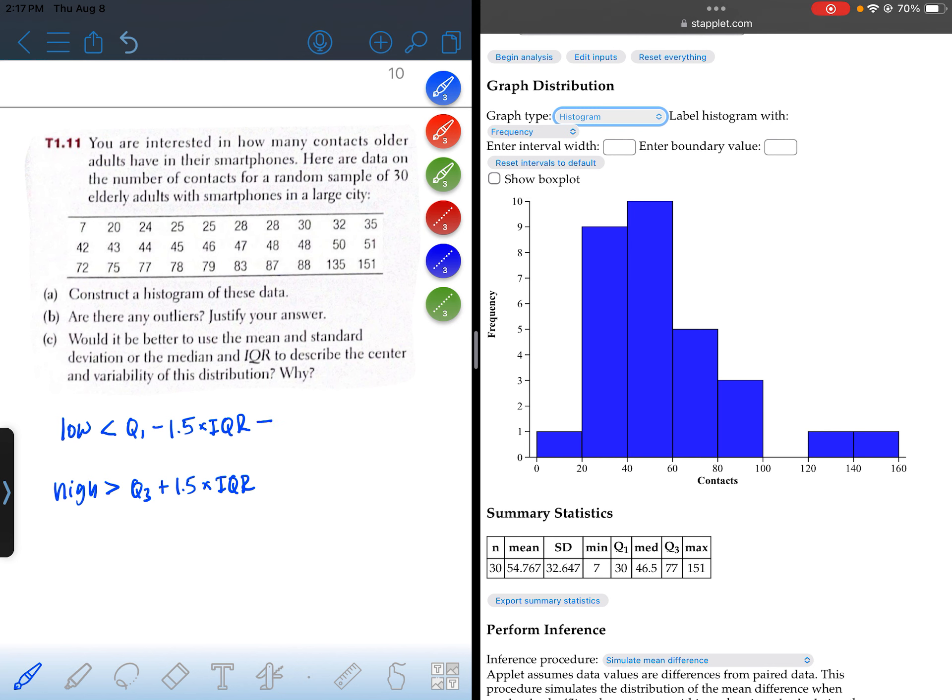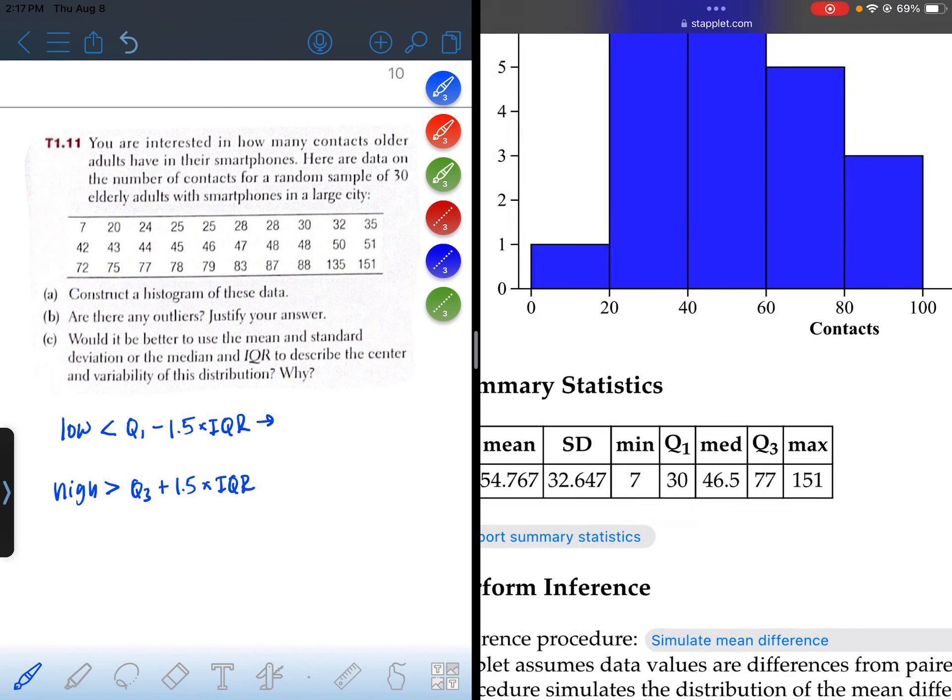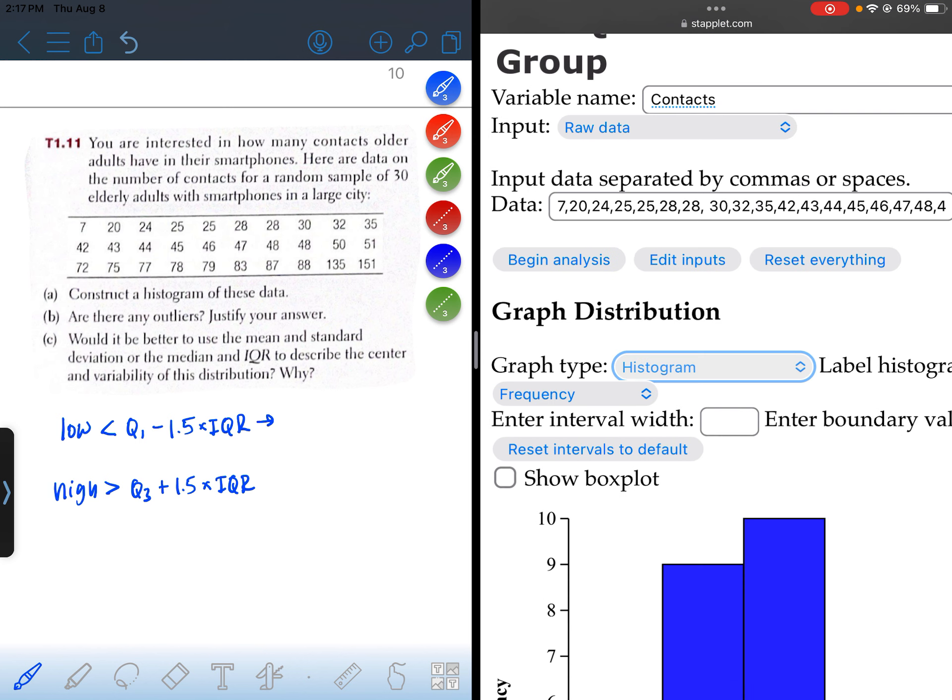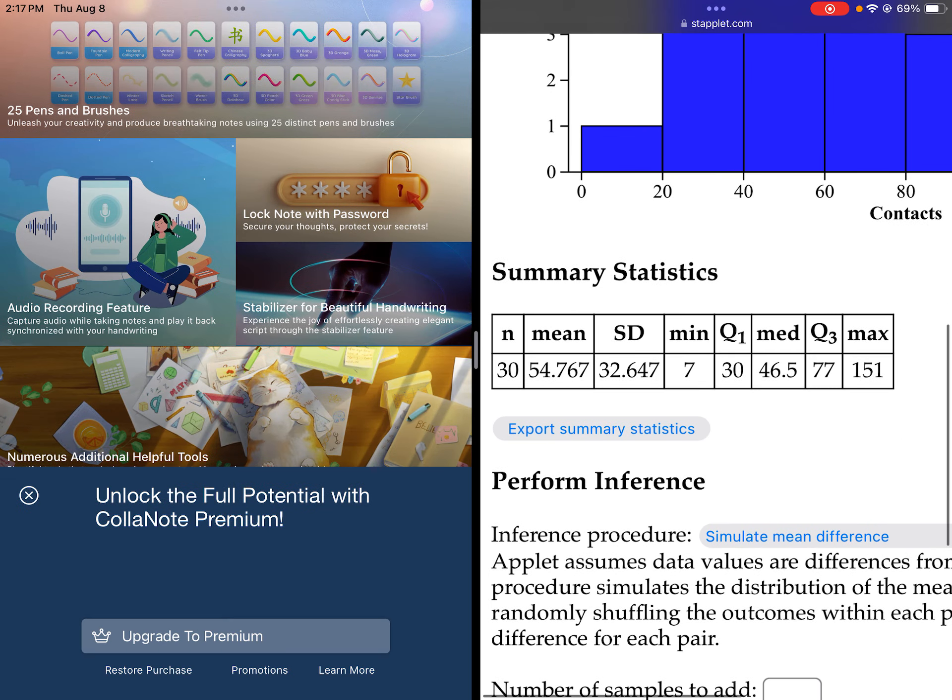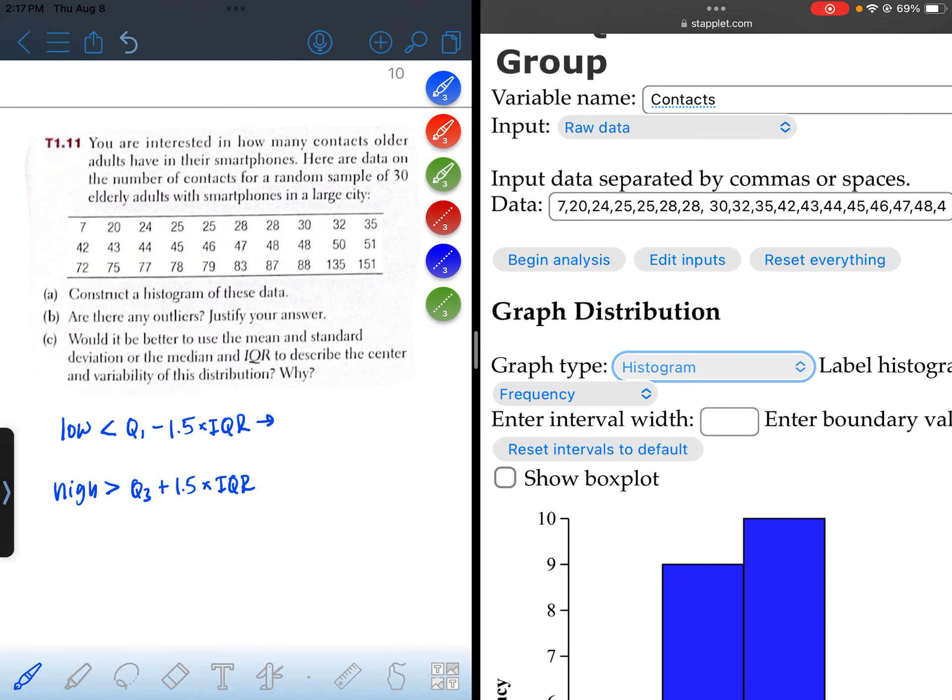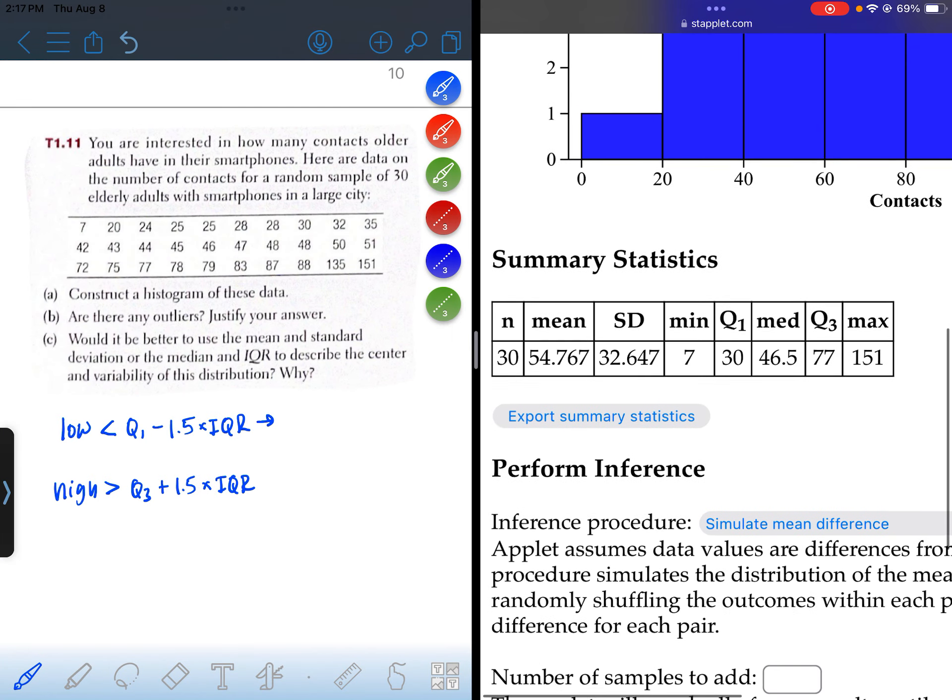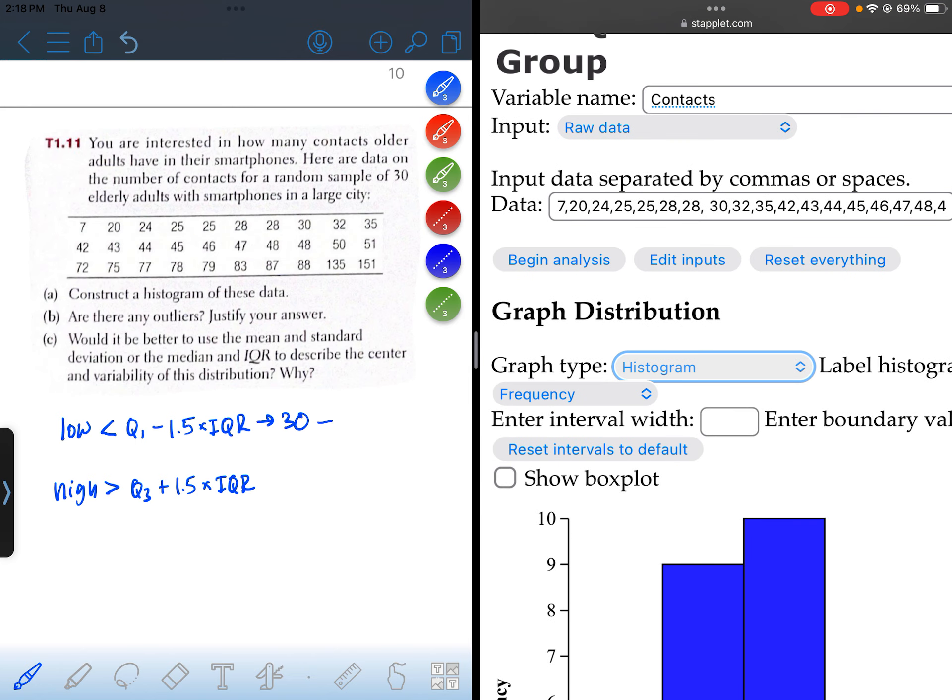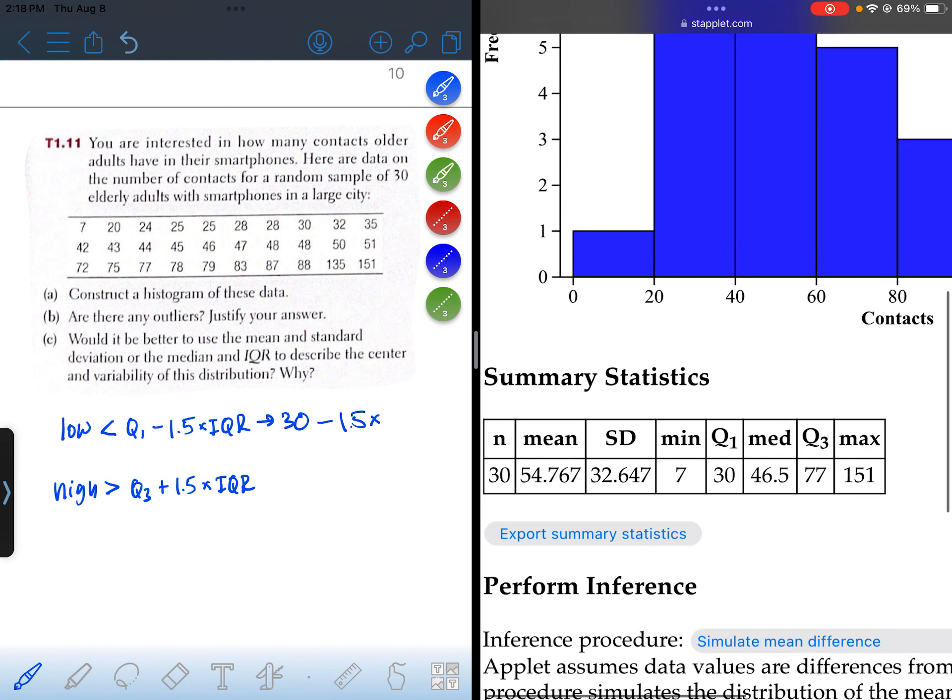Alright, so I'm going to look over here in the summary statistics. 30 minus one and a half times the IQR. So Q1 is 30, Q3 is 77, the difference between the quartiles is 47.